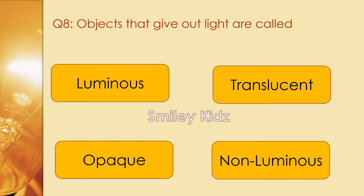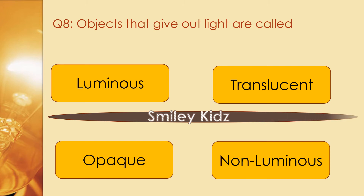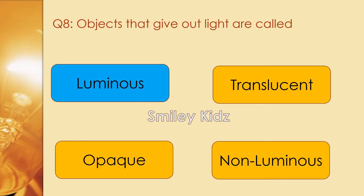Question number 8. Objects that do not emit light are called. Options are luminous, translucent, opaque, and non-luminous. The right answer is luminous. Objects that do not emit light are called luminous objects.